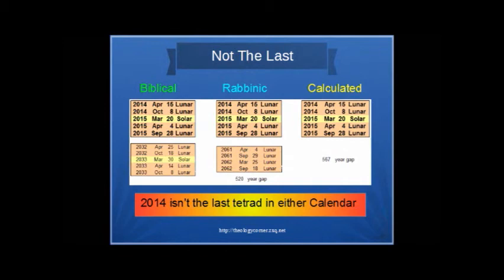And now the moment we've all been waiting for. As you can see, all three agree on the 2014-2015 tetrad. But after that, the calculated calendar veers away just like it did in the year 227 and doesn't agree with either of the criteria.